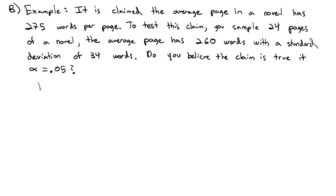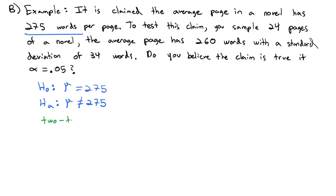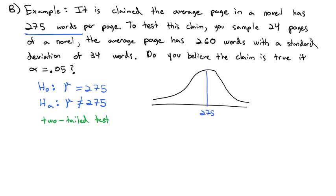We start every hypothesis test with a null hypothesis. Here we're talking about a population mean, and the claim is that the mean is 275 words per page. For the alternative hypothesis, we're not saying less than or greater than — we just want to know if the claim is true, so we say mu is not equal to 275. Because we have that not equal, we're dealing with a two-tailed test, with the hypothesized mean of 275 in the middle, but our sample came out at 260, so we shade both sides.